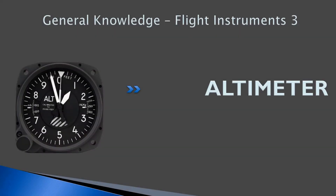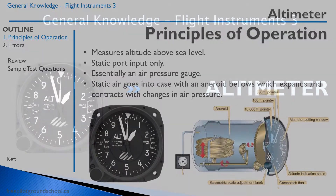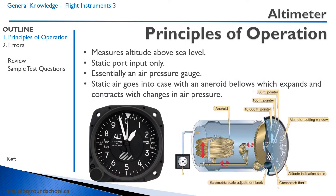Hello everyone. Welcome back to freepilotgroundschool.ca. This is our third lesson on flight instruments. We're going to be discussing the altimeter. The altimeter measures the altitude above sea level. It receives information solely from the static port, and it's essentially an atmospheric air pressure gauge.